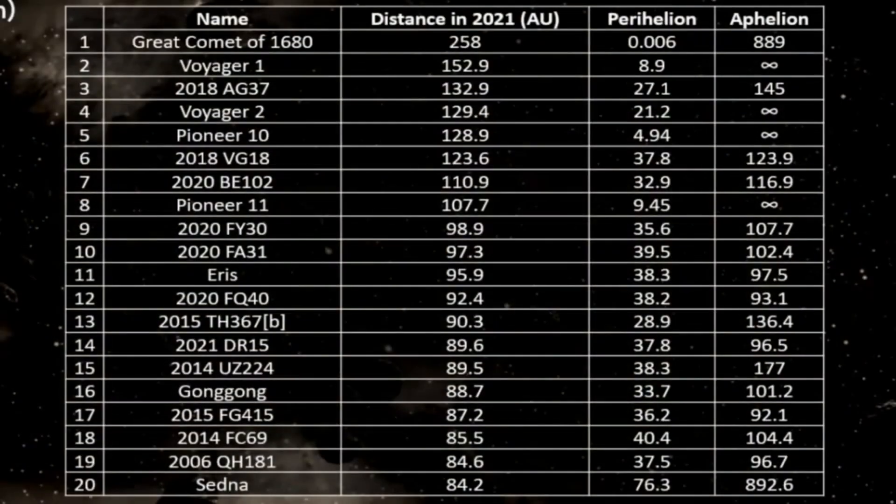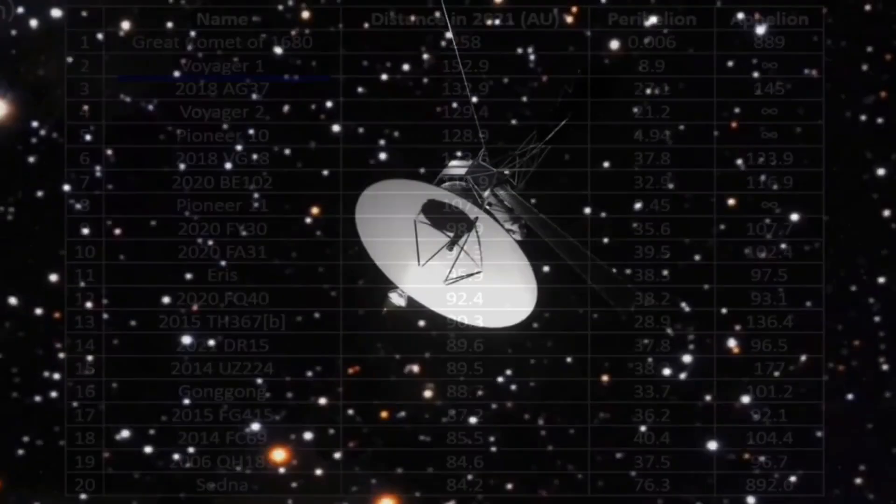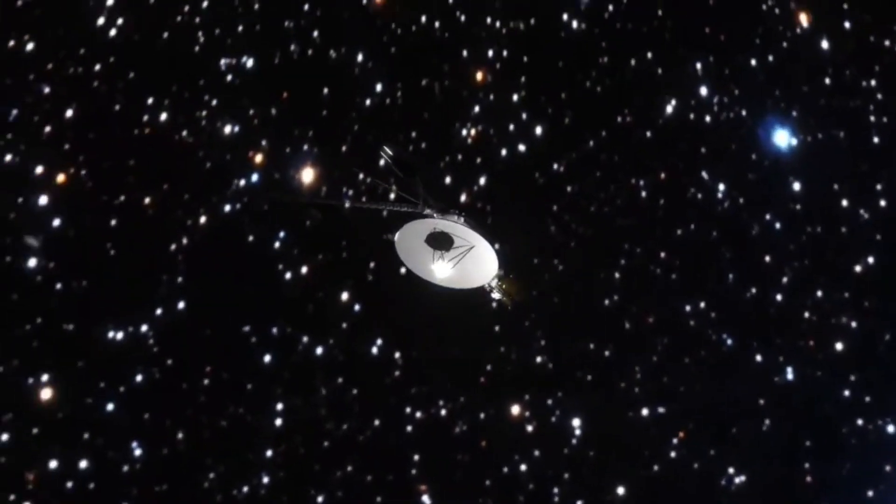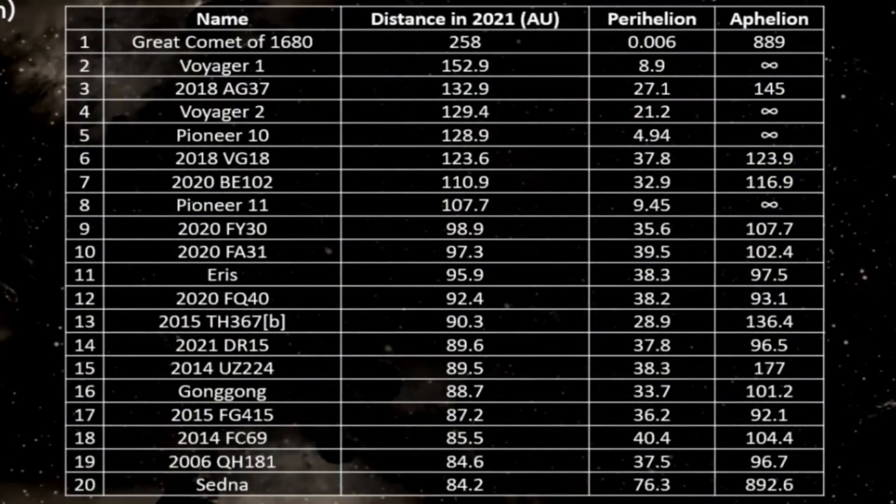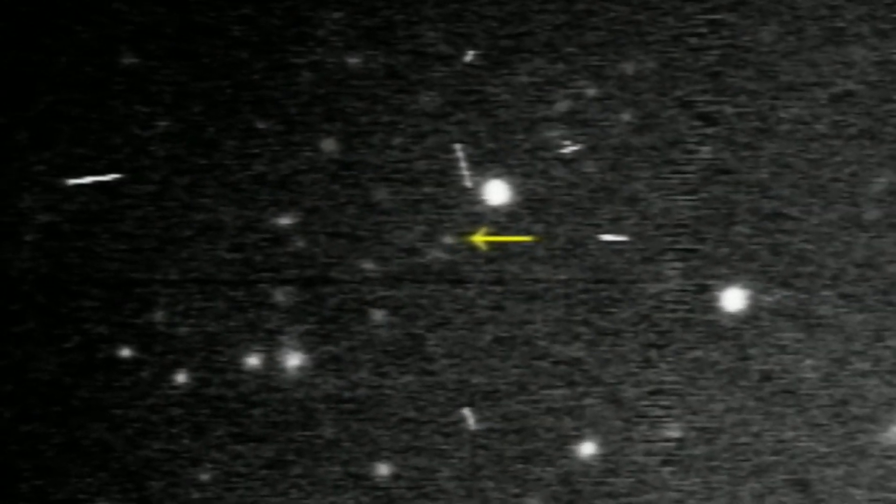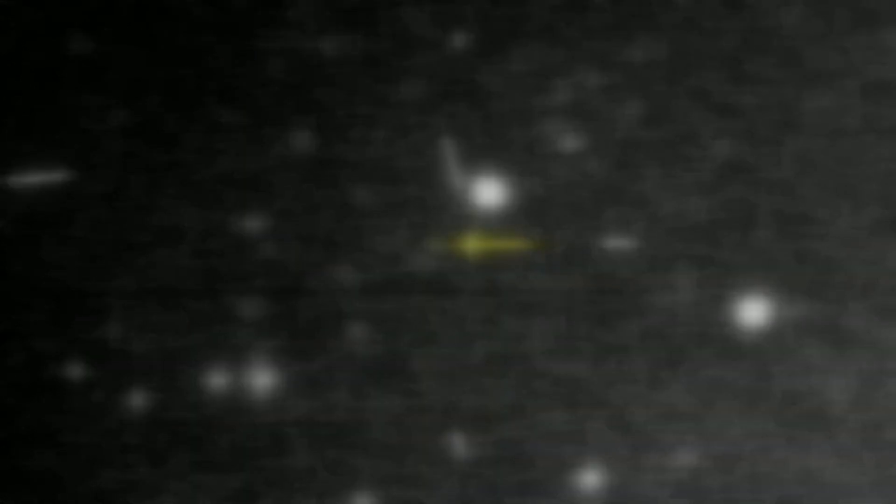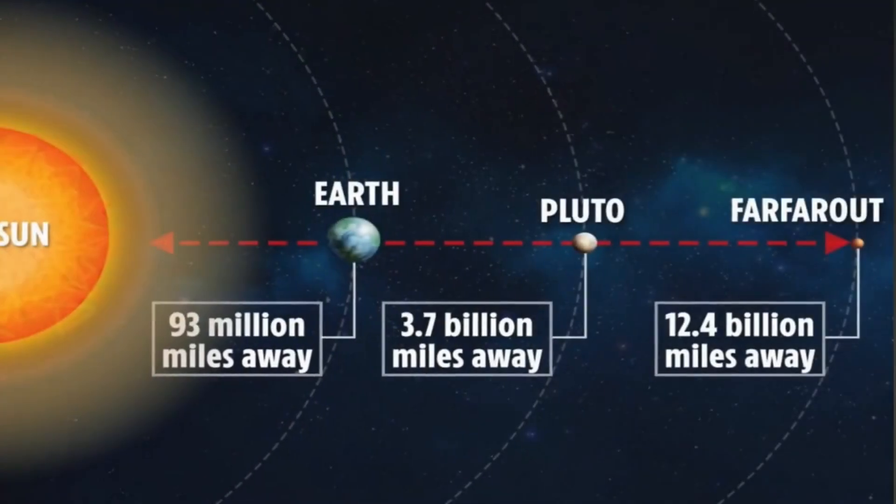The second object, I say quite shockingly, is actually Voyager 1 at 152.9 AU. Again, we only know of its existence because we made it. Voyager 2 and Pioneer 10 are also in 5th and 4th place, and the only thing between them is a strange object known as 2018 AG37, a distant trans-Neptunian object discovered 132 astronomical units from the Sun, farther than any currently observable known object in the solar system.